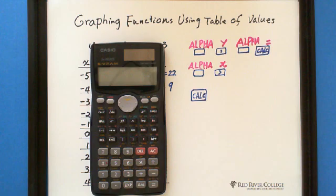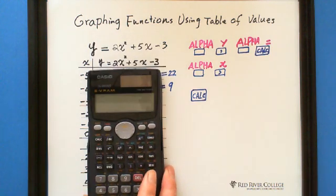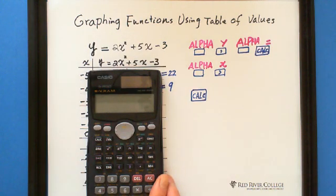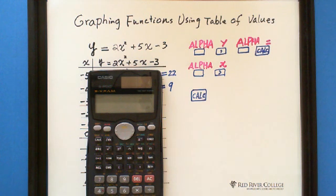First we enter the function, which is 2x squared plus 5x minus 3.